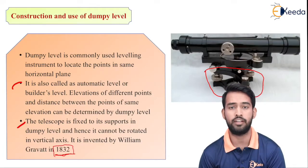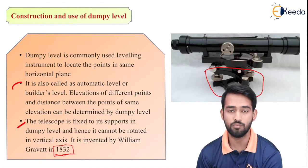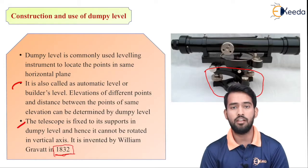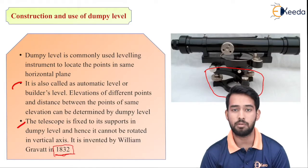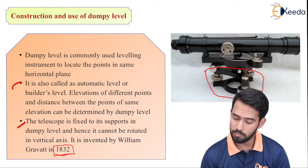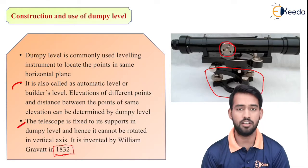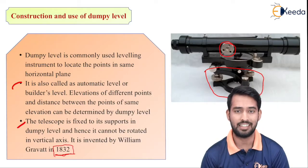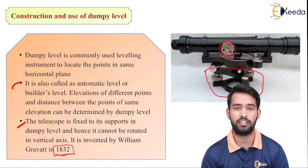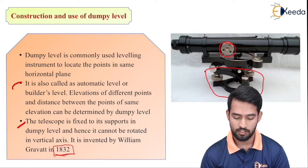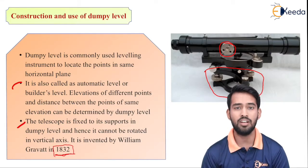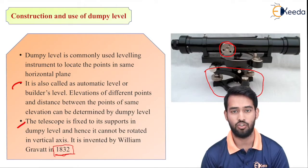By using dumpy level, we can actually find out heights only — we cannot find out vertical angles because the telescope is fixed and cannot be rotated in the vertical plane. It can be rotated in the horizontal plane only. So the dumpy level is used to find out vertical elevation only.